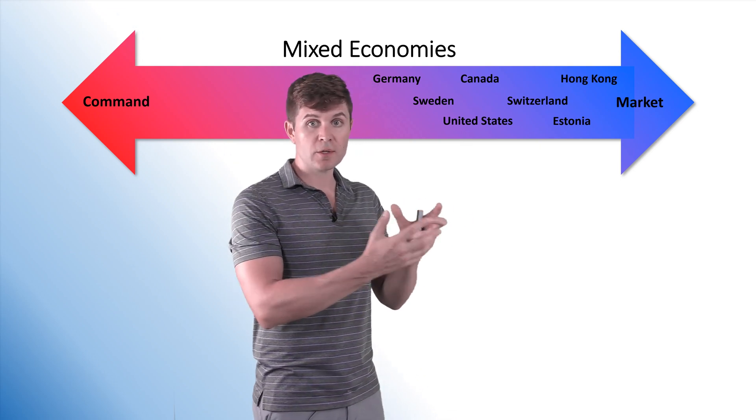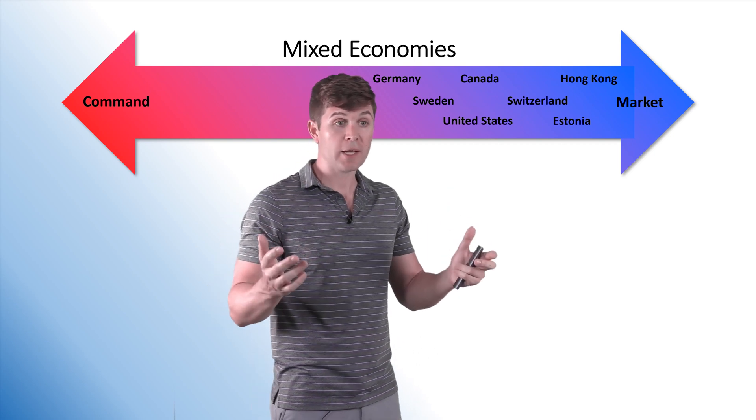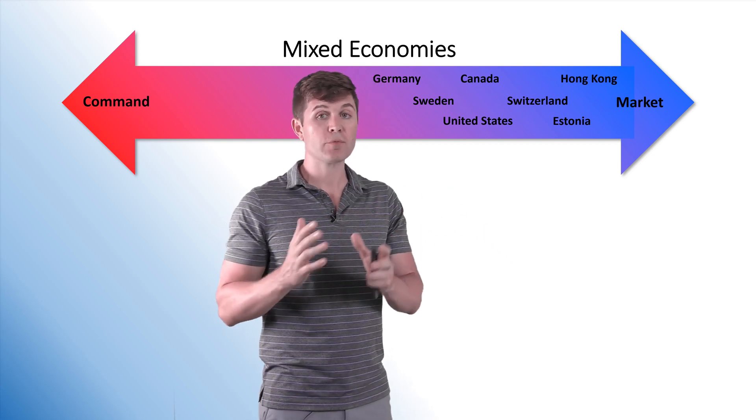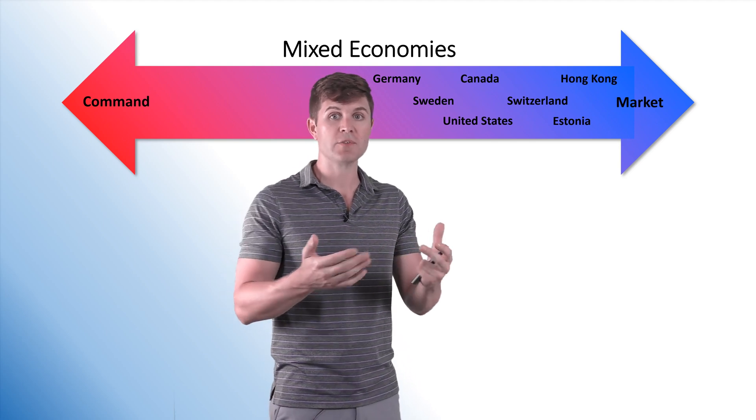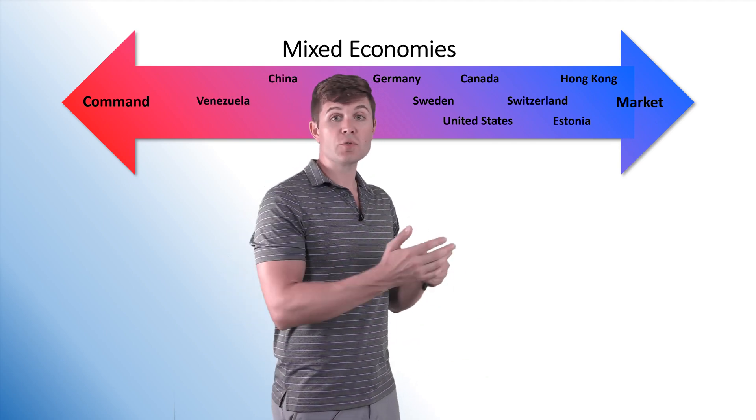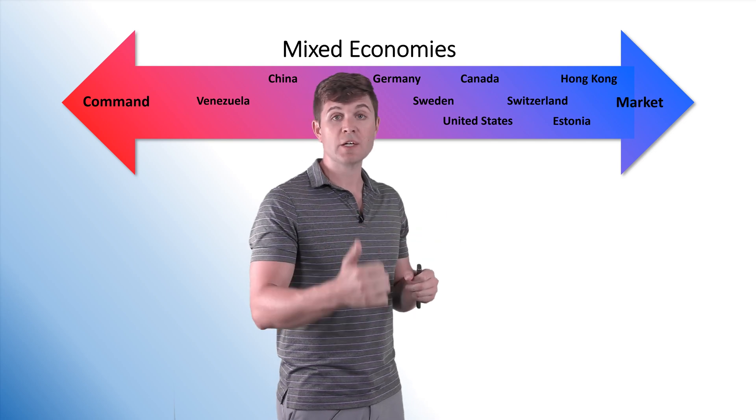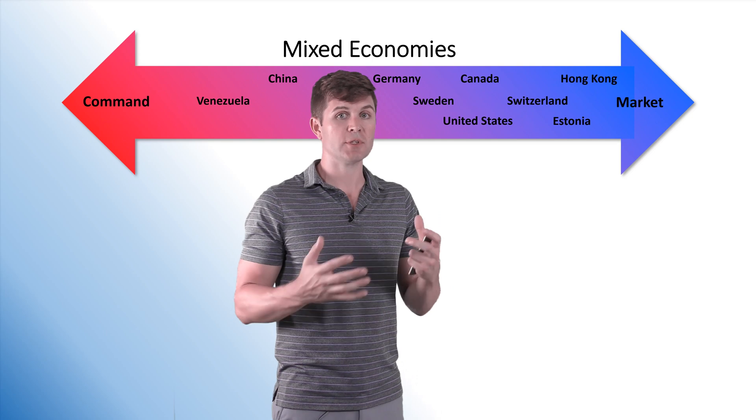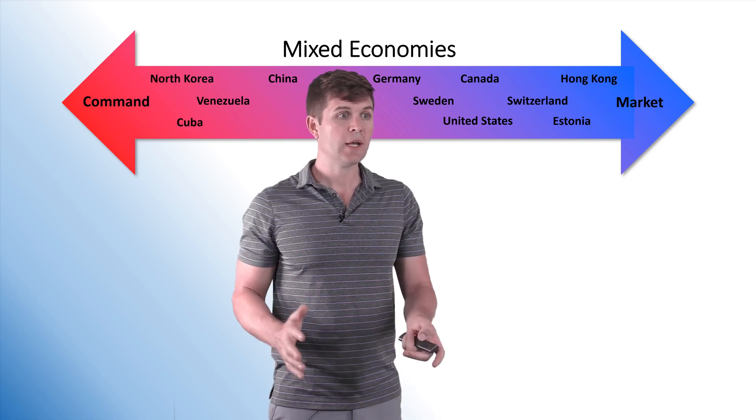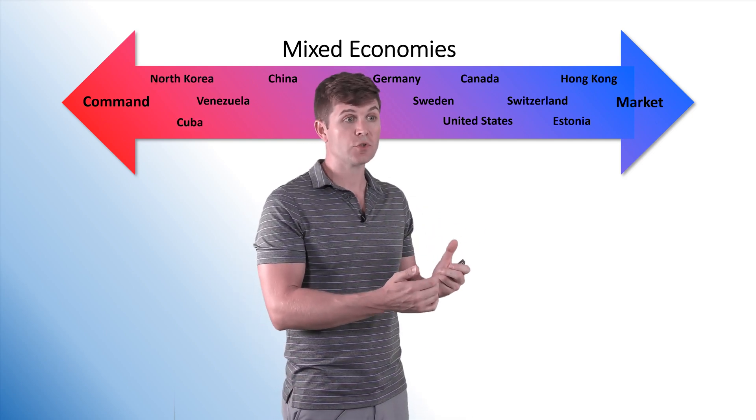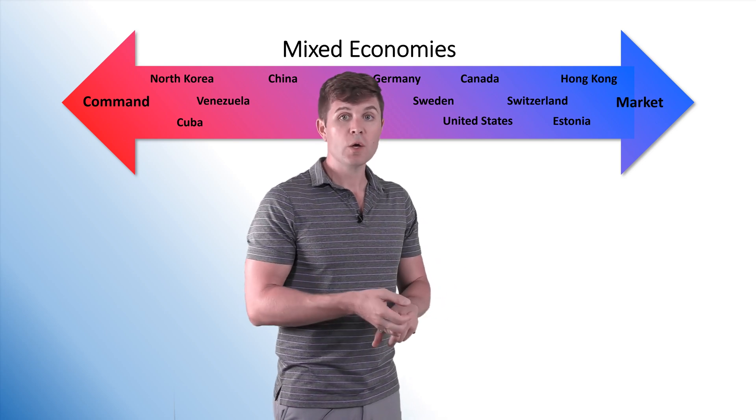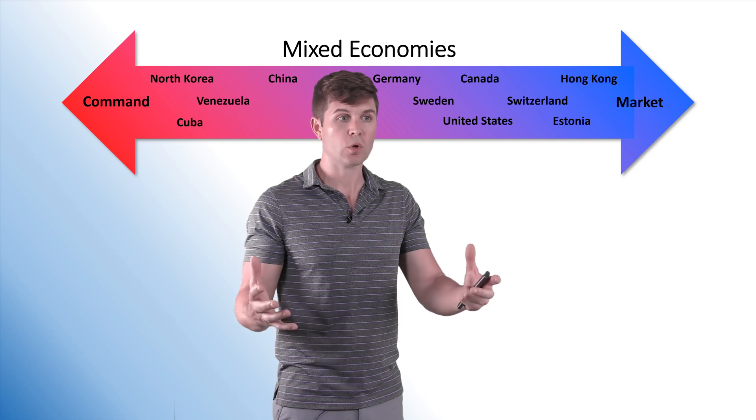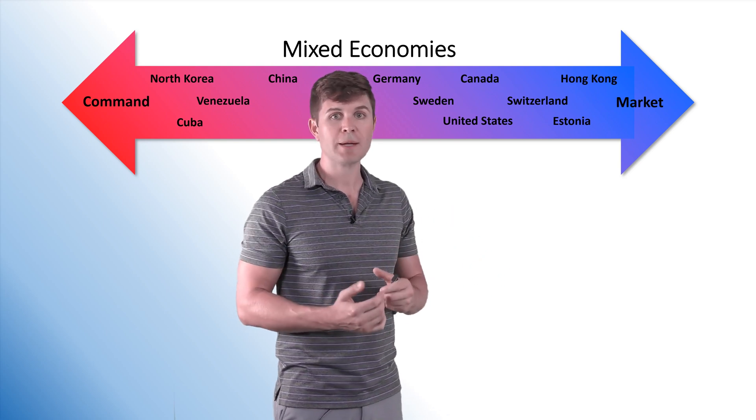Sweden, Germany, they start to get a little more socialistic in some aspects. It means the government is determining what, how, and for whom to produce in more areas than in our country. As we start to move more and more towards the command, we see countries like China and Venezuela where the government is heavily involved in determining the what, how, and for whom questions. And then finally, in the most extreme versions, we have North Korea and Cuba, which we consider them to be the communist nations in this country, in this world. They are the closest to a pure command economy. But even in those countries, some market aspects still exist.